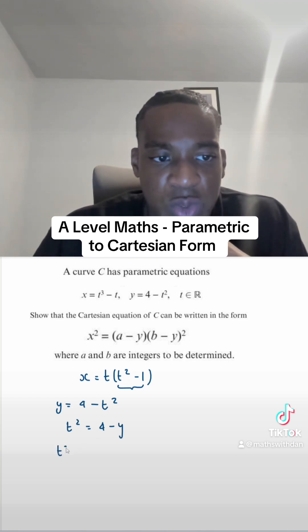So that's t squared. That would mean t squared minus 1 equals 4 minus y minus 1. Just taking 1 from both sides, that simplifies to t squared minus 1 equals 3 minus y.